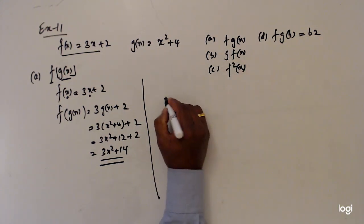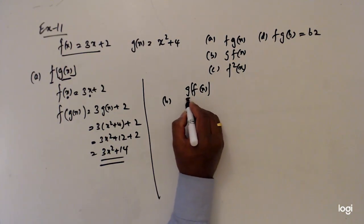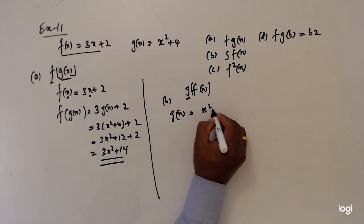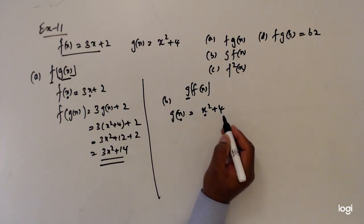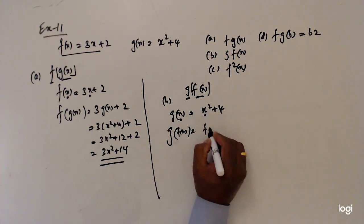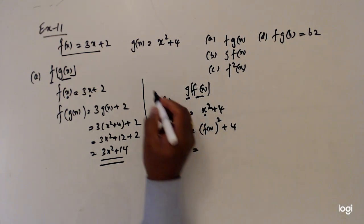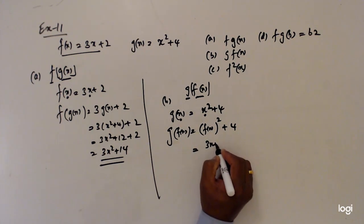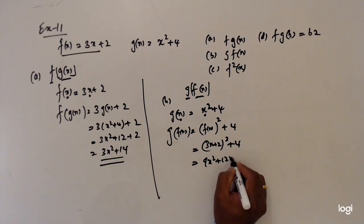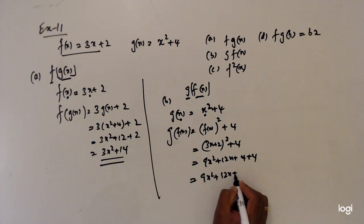The next one is gf(x). I can see f(x) is inside g. So I write g first: g(x) equals x squared plus 4. Now I replace each and every x with f(x), so g(f(x)) equals f(x) squared plus 4. What is f(x)? f(x) is 3x plus 2. So gf(x) equals (3x+2) squared plus 4, which expands to 9x² plus 12x plus 4 plus 4, giving 9x² plus 12x plus 8.